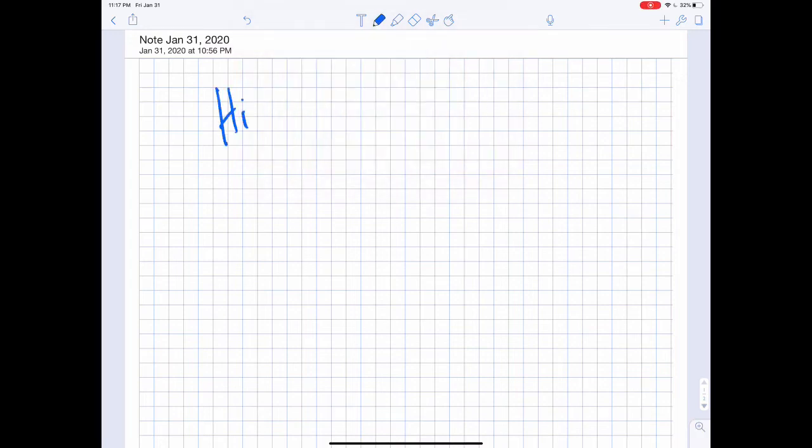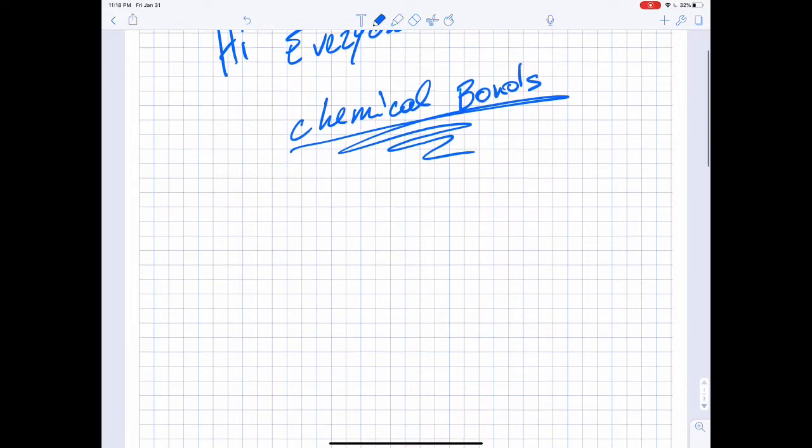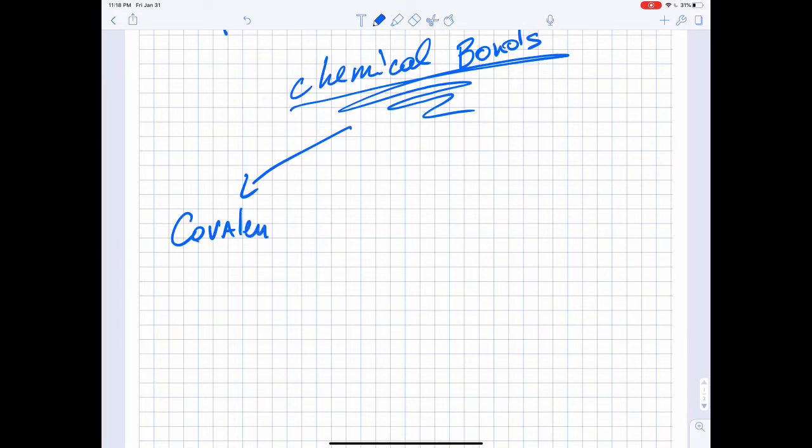Hi everyone, my name is Leonardo Silenzi and today we are going to talk about chemical bonds. I'm going to talk about two different types of bonds: covalent bonds and non-covalent bonds.